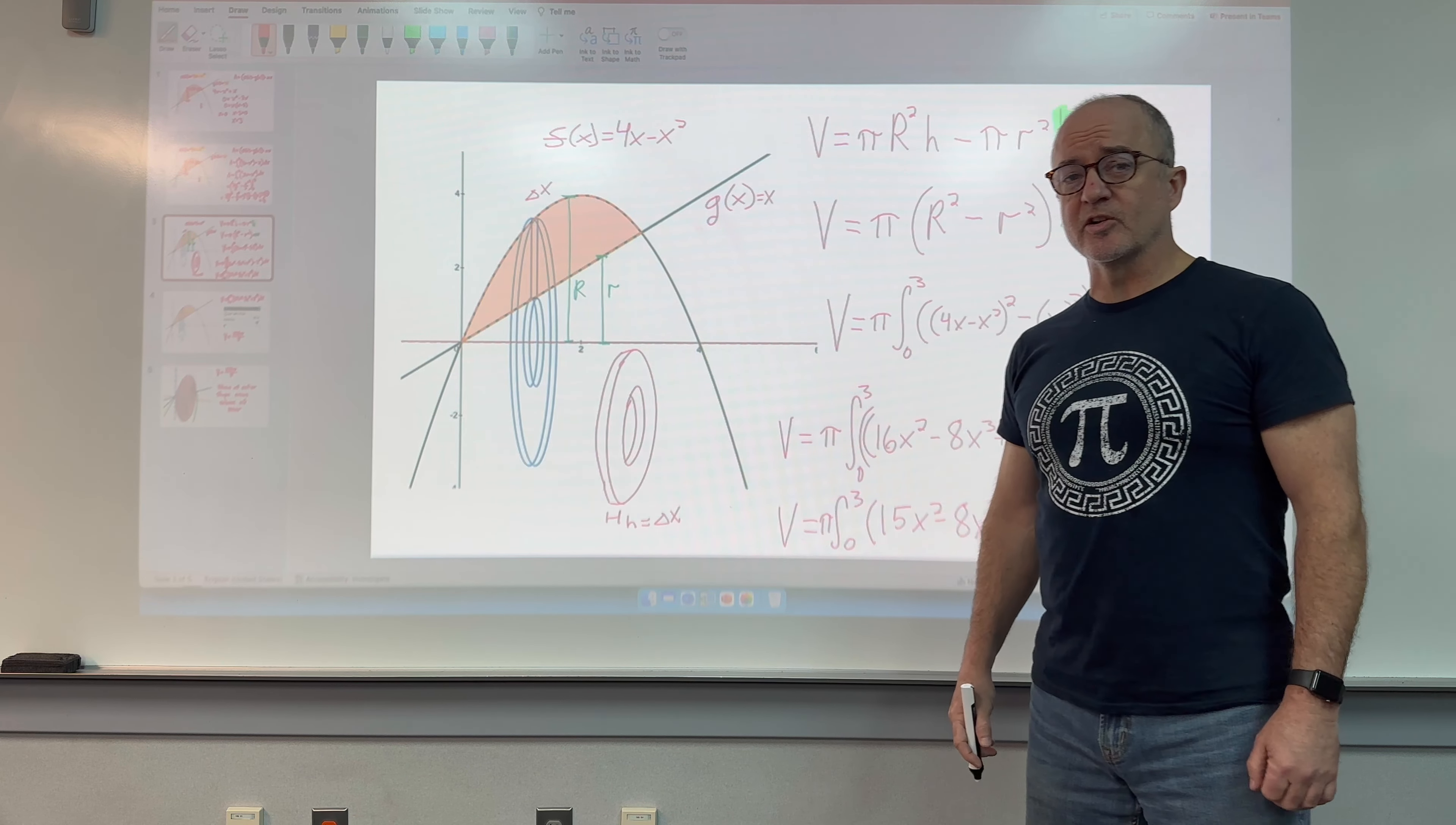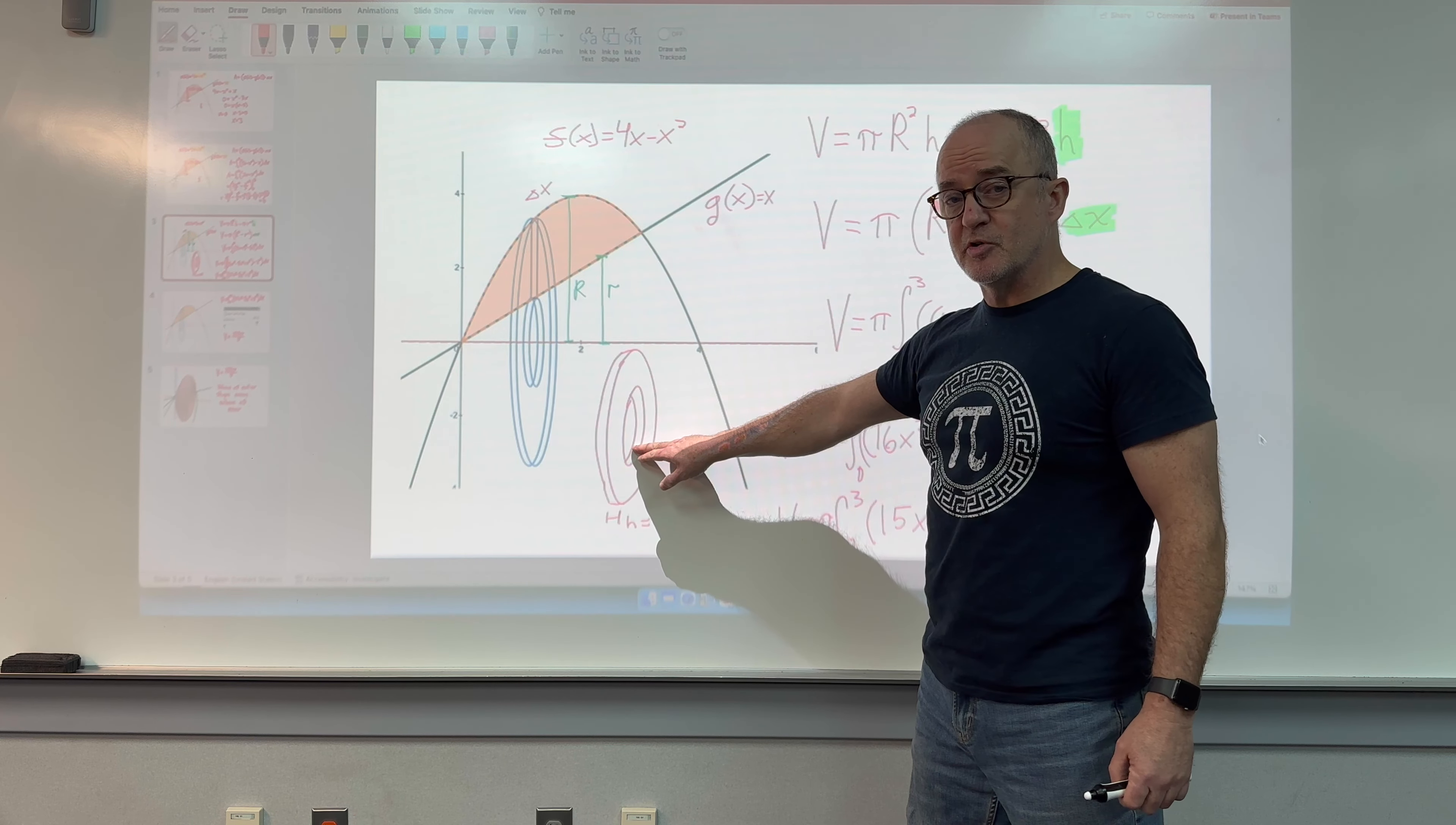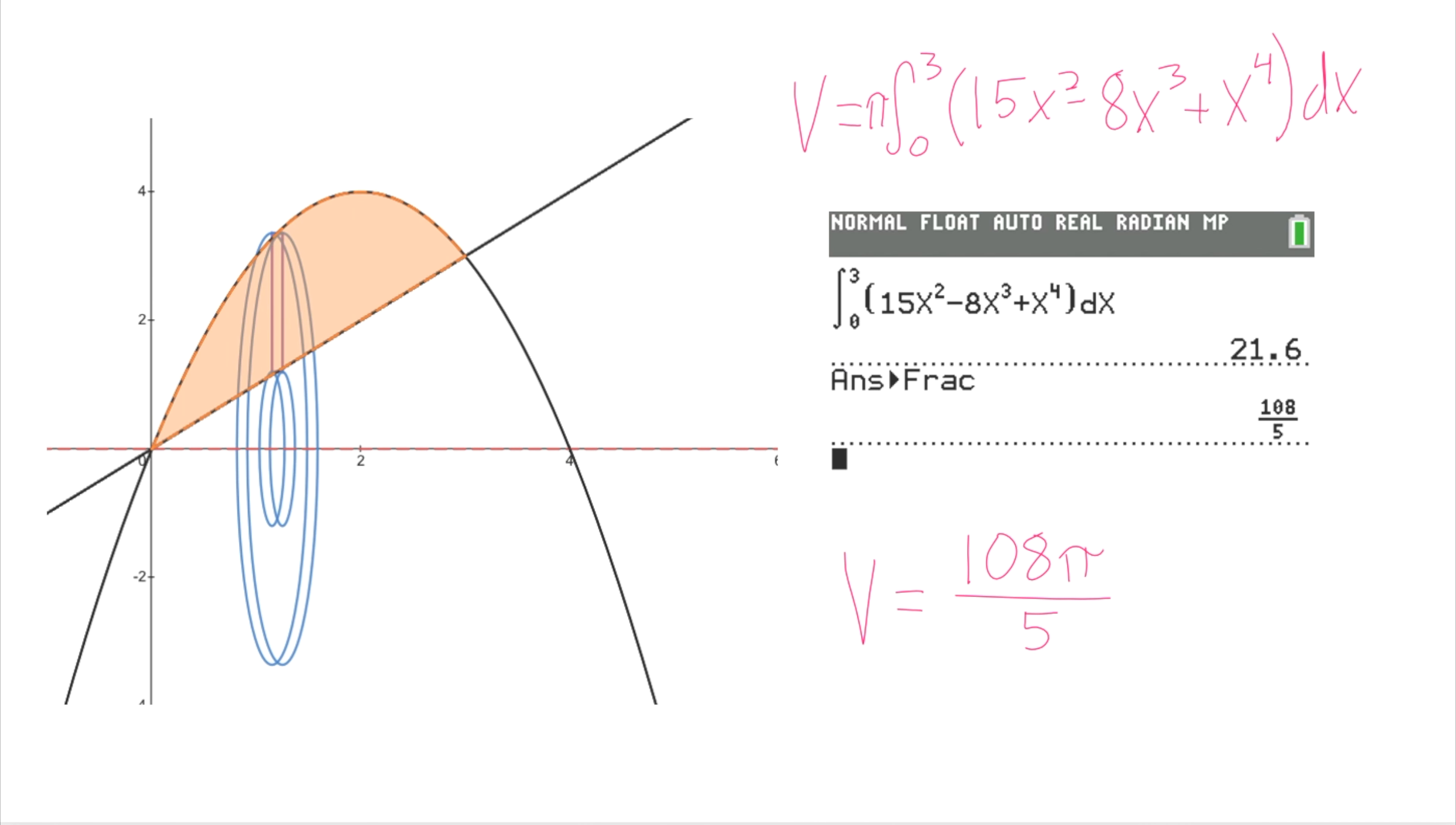So left you on a bit of a cliffhanger last time. We had set up the integral that would describe the volume of what you got when you added up the volumes of an infinite number of infinitely thin washers, that is cylinders with a proportional mini cylinder removed from the center. We set up the volume of a single cylinder based on our Riemann rectangle. We set up the integral.